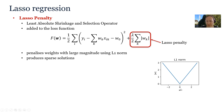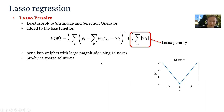We can see that for a zero weight we have zero penalty, and as the weight increases in either the positive or negative direction we get an increased penalty, but this time it increases linearly with the magnitude of the weight. This type of penalty produces sparse solutions, which we will discuss in a moment.